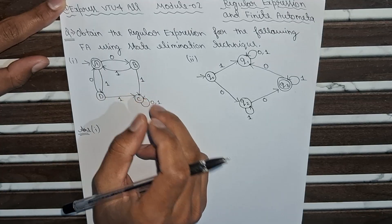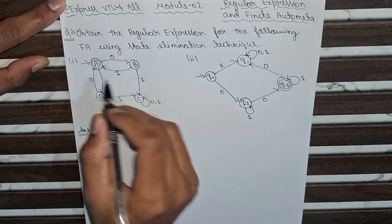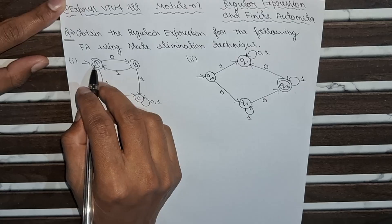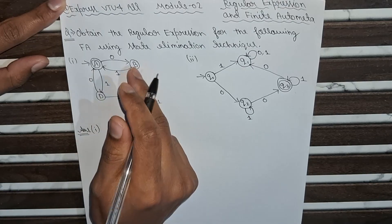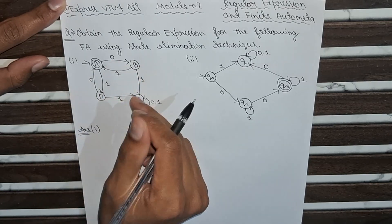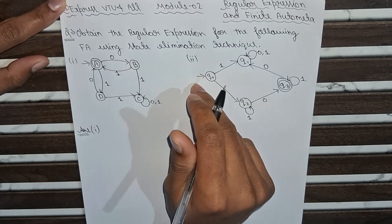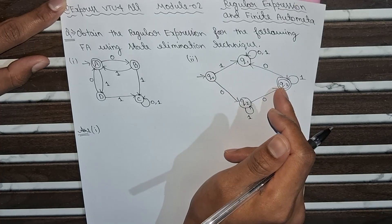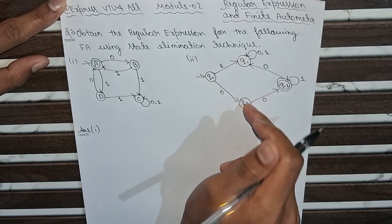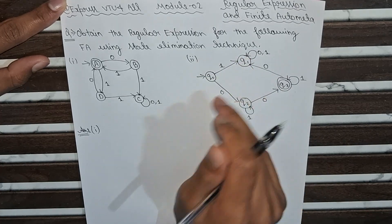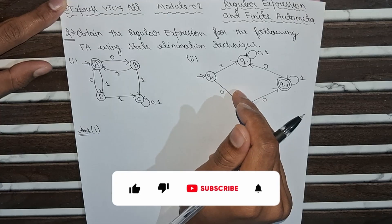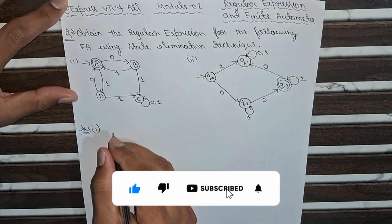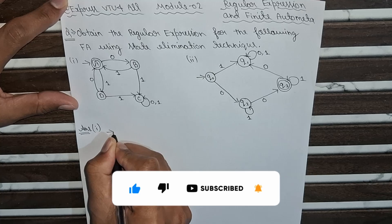Here, this is the initial state and this is also the final state. So we will eliminate these three intermediary states. This is the initial state and this is the final state, so we will eliminate q1 and q2 from this finite automata to obtain a regular expression.